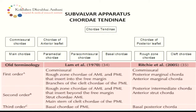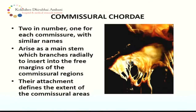The old terminology was first order, second order, third order. Now what is followed, revised by Ritchie et al. in 2005, calls them commissural, posterior marginal, anterior marginal, posterior intermediate chorda, anterior strut chorda, and basal posterior chorda. The commissural chordae are two in number, one for each commissure with similar names. They arise as a main stem which branches radially to insert to the free margin of the commissural region, and their attachment defines the extent of the commissural areas.